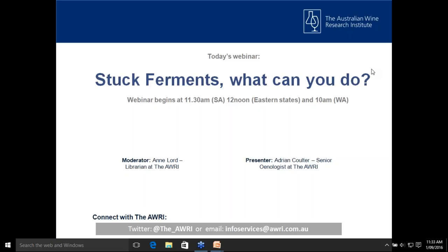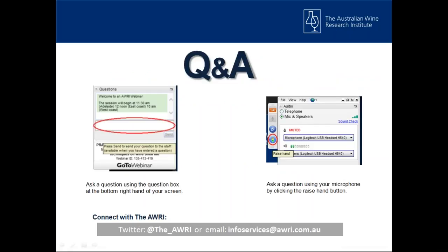The webinar is being recorded and will be available to view via the AWRI website. It's important to remember that webinars are interactive and there are a number of ways to get involved. To ask a question, please type into the questions section of your control panel in the bottom right-hand corner of your screen. For those of you with access to a microphone, there is also the option of speaking directly with our presenter by clicking the raise hand button, located in the top left section of your control panel.